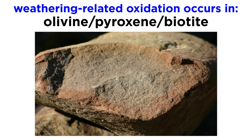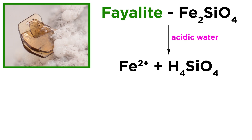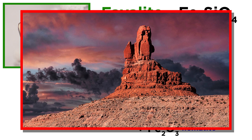Weathering-related oxidation is extremely common in iron-containing minerals like olivine, pyroxene, and biotite. For example, fayalite, the iron end member of olivine, is first attacked by acidic waters, breaking it down to silicic acid and dissolved Fe2+ ions. Next, aqueous Fe2+ has one of its electrons stolen by oxygen and becomes Fe3+, which then reacts with water to form precipitates such as amorphous ferric hydroxide, goethite (FeOOH), and hematite (Fe2O3). Compounds of ferric iron are notoriously insoluble and are often responsible for the red color in rocks.